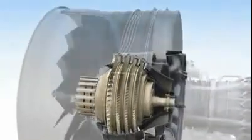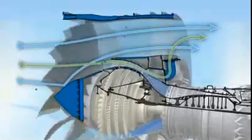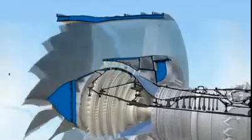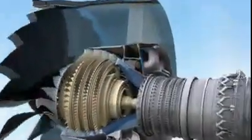Aft of the fan is the low-pressure compressor. As with many components in the GENX, it incorporates the latest 3D aerodynamic improvements, as well as a debris-rejecting system to keep foreign material from entering the compressor.